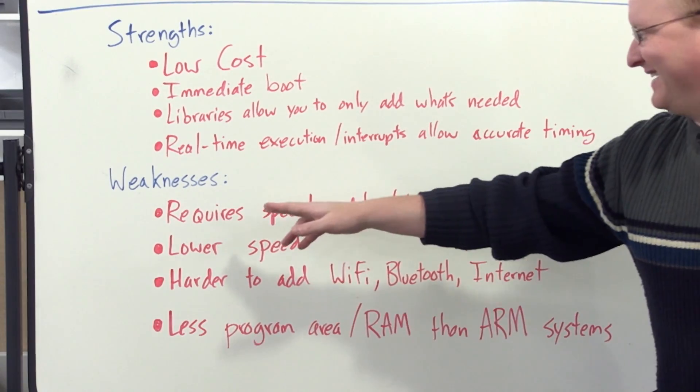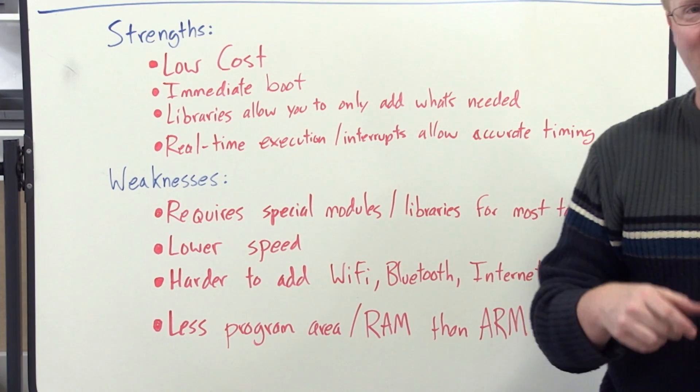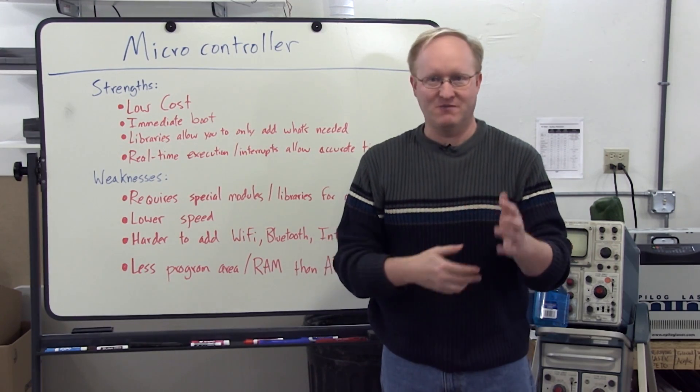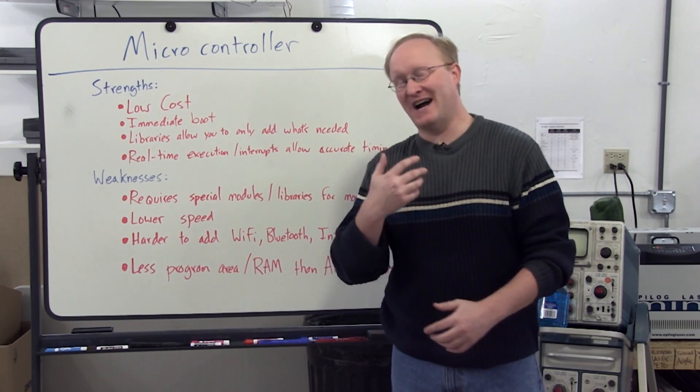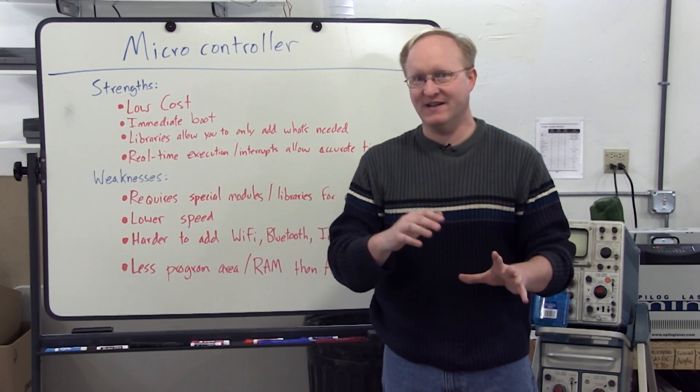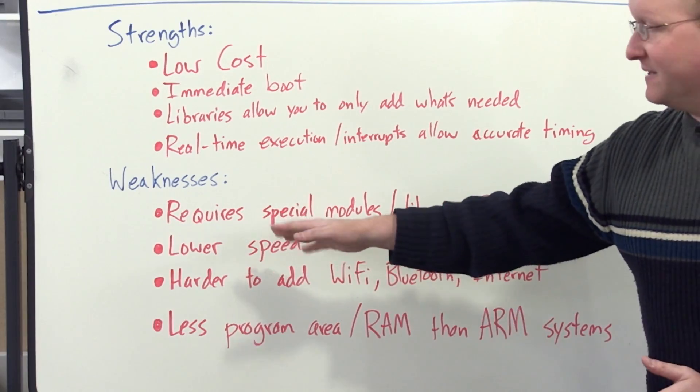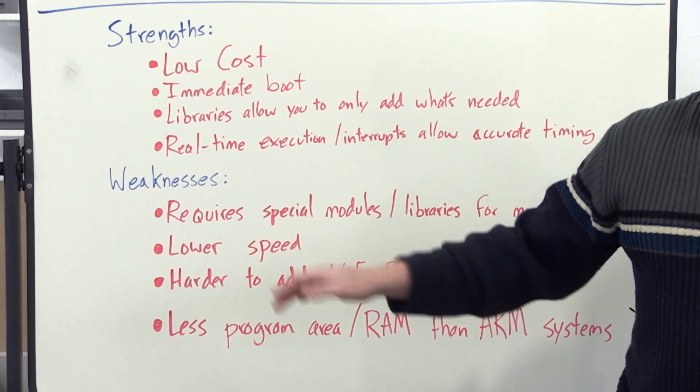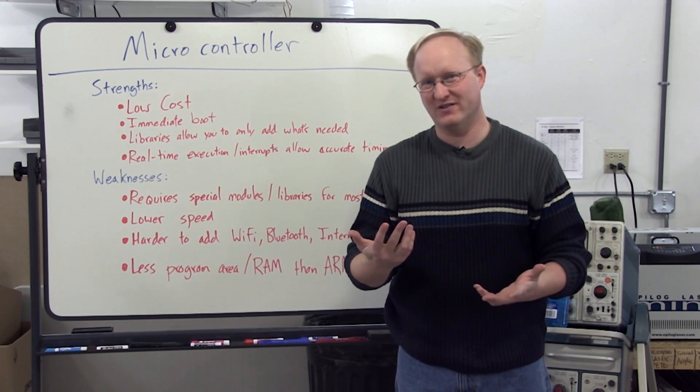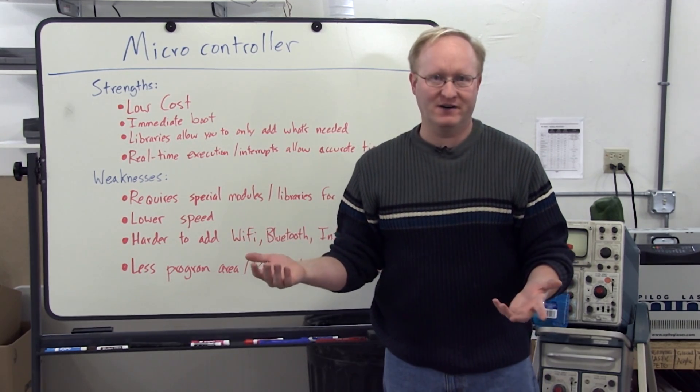Weaknesses. I know this is a strength, but it requires special modules or libraries for most tasks. So you have to find the library you need for your application, and you might not always be able to find the library. You might not know how to use it. You might not know how the code works. The libraries usually make it simple, but, you know, you still have to wade through all of that. Typically, the microcontrollers are going to have a lower speed than a Raspberry Pi. 16 megahertz, 80 megahertz, 40 megahertz, are all pretty common versus, what's a Raspberry Pi? 700 megahertz.